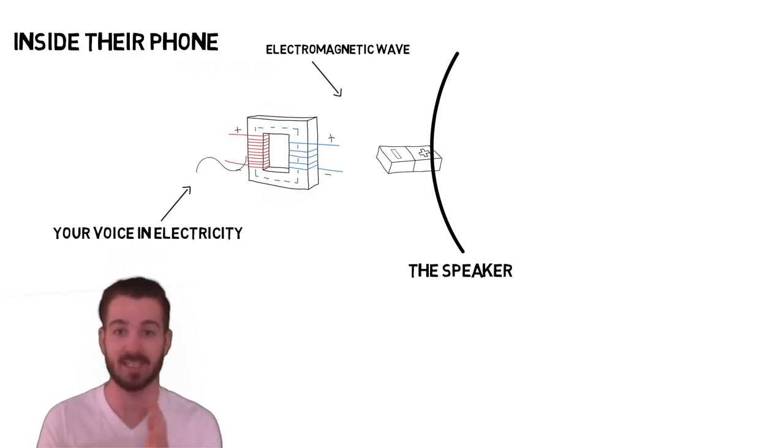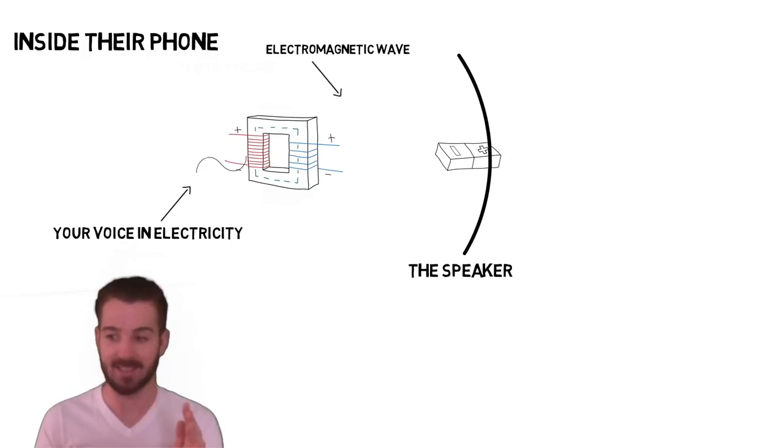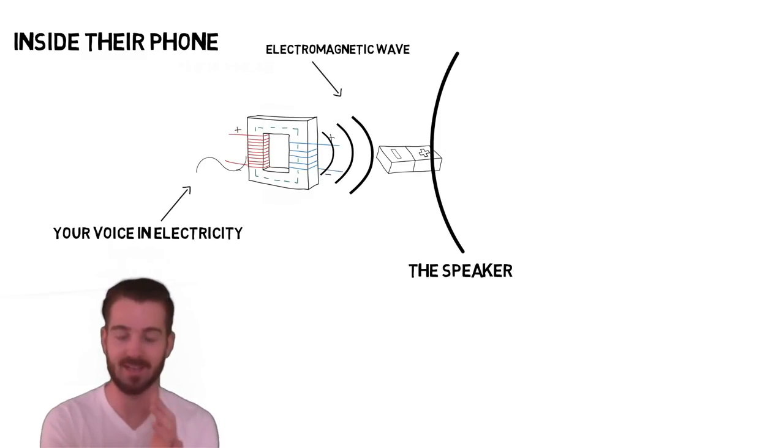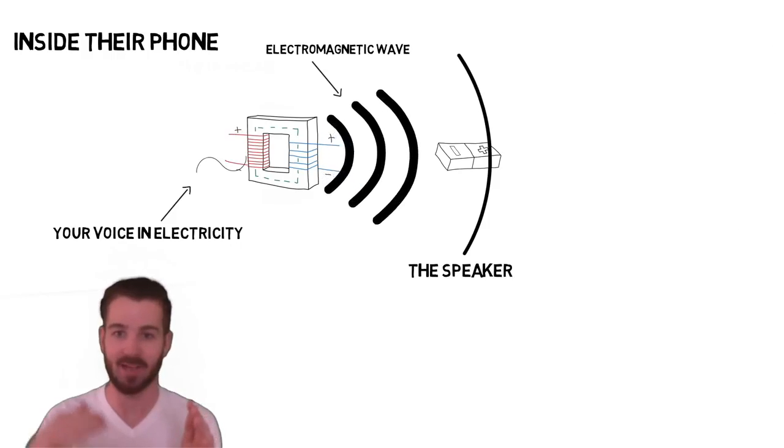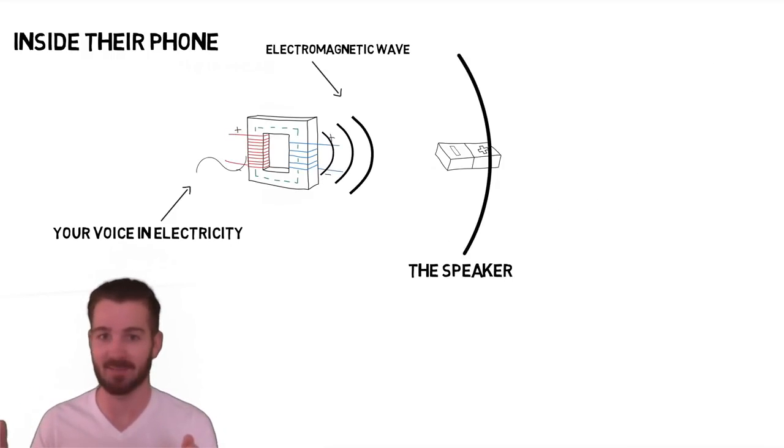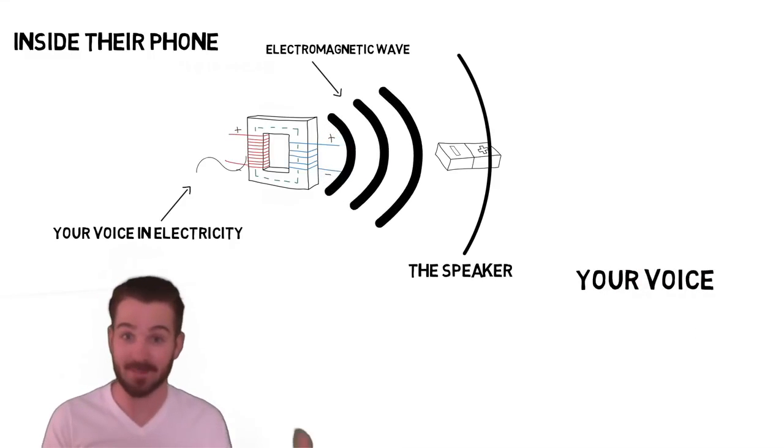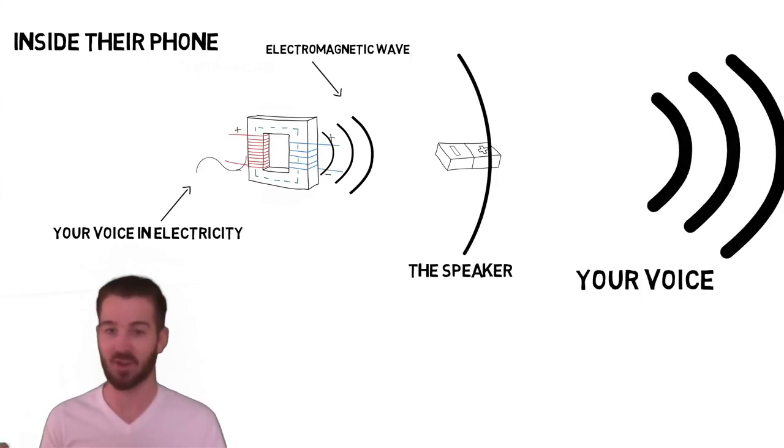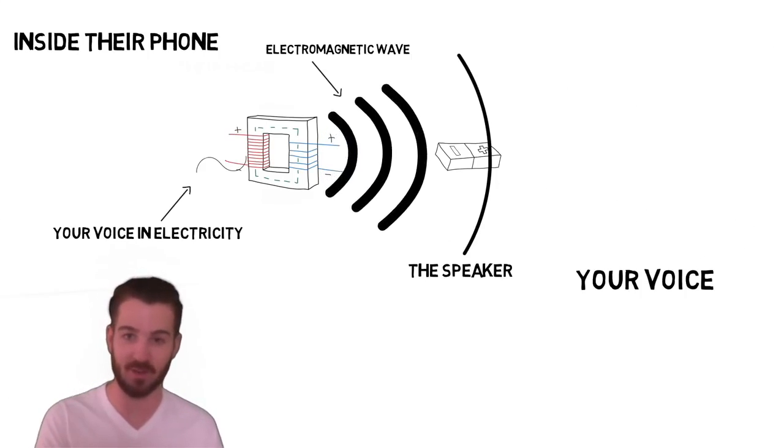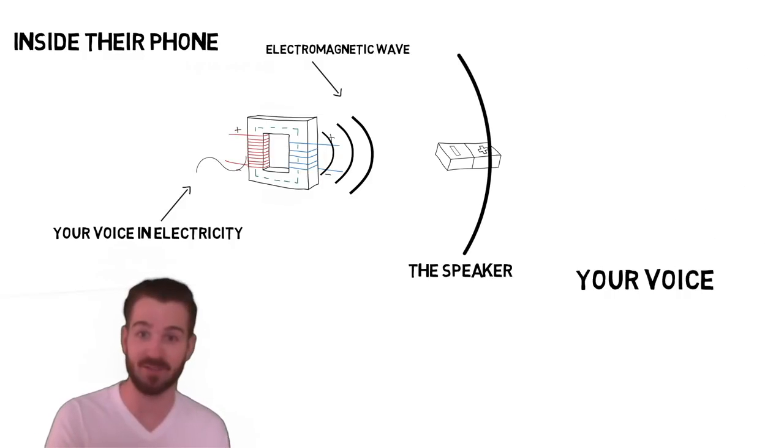And this piece of material moves in exactly the same way as the electrical signal. As it moves, it pushes the air. And the air then moves as a wave in exactly the same way as the electrical signal, which is exactly the same as the voice that you spoke with. Which means that your voice seems to come out of the phone on the other side of the world. But what's actually happened is it's gone from a sound wave to an electrical wave back to a sound wave again.